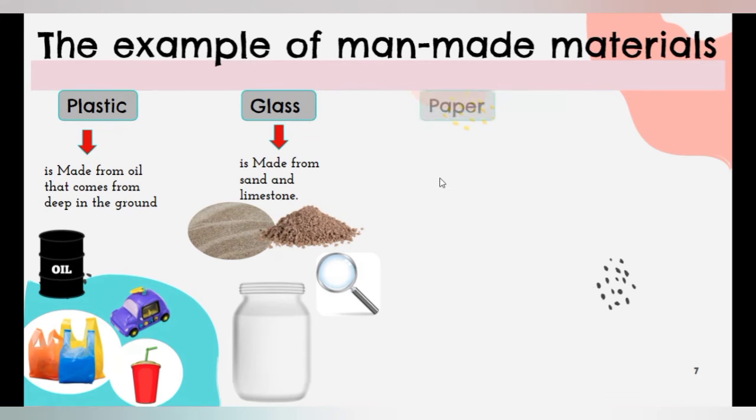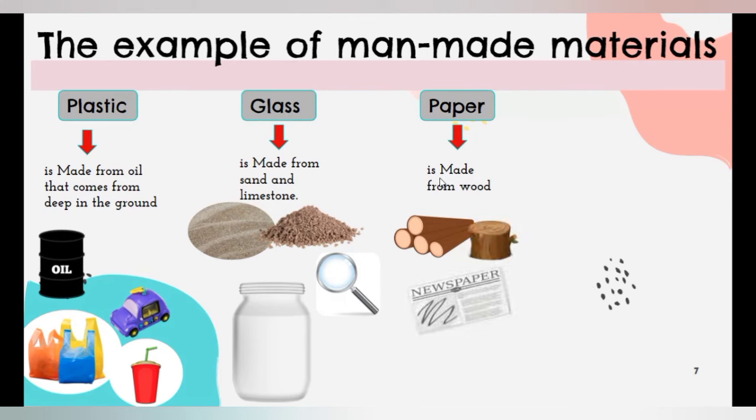Next, paper. Paper is made from wood. It can be used to make newspaper, book, and cardboard box.